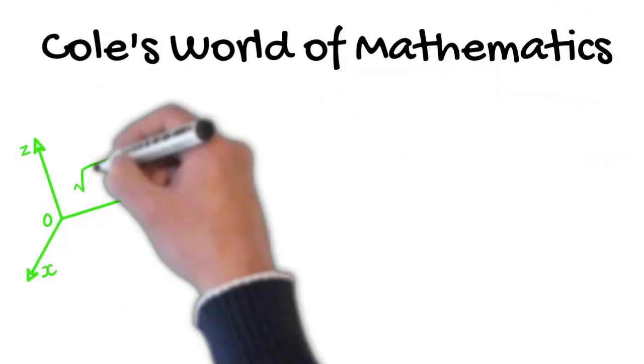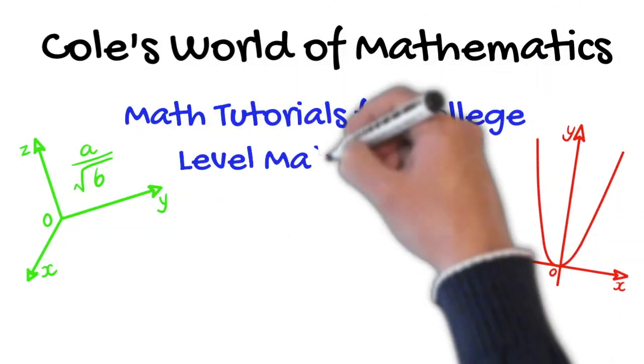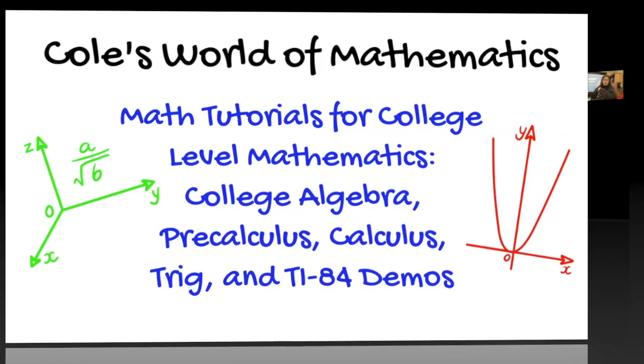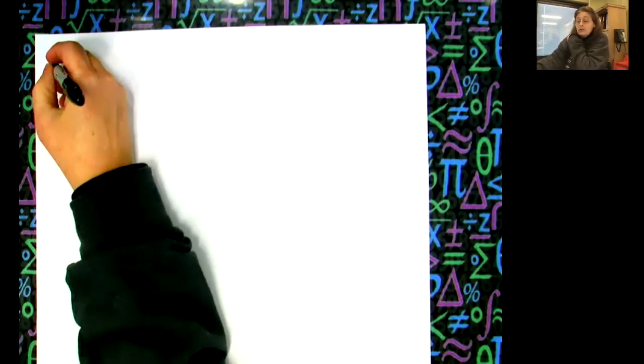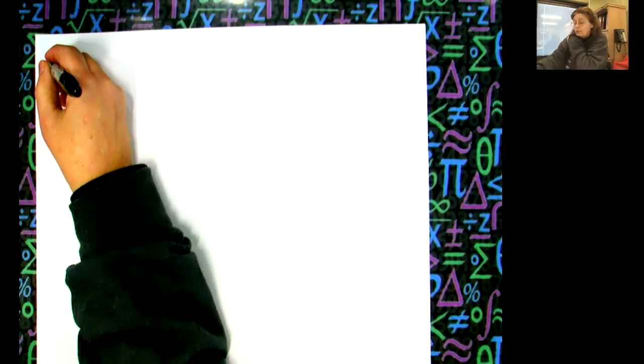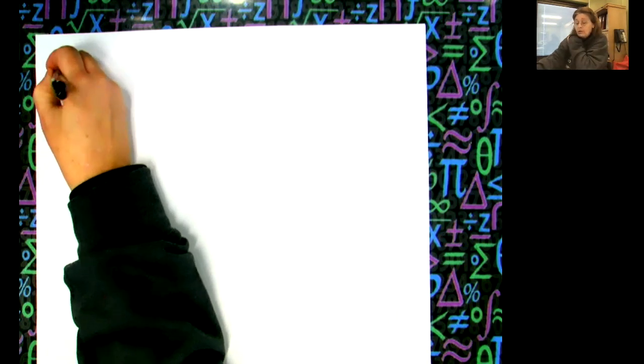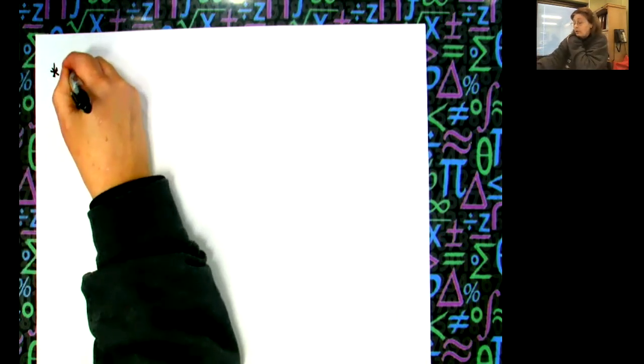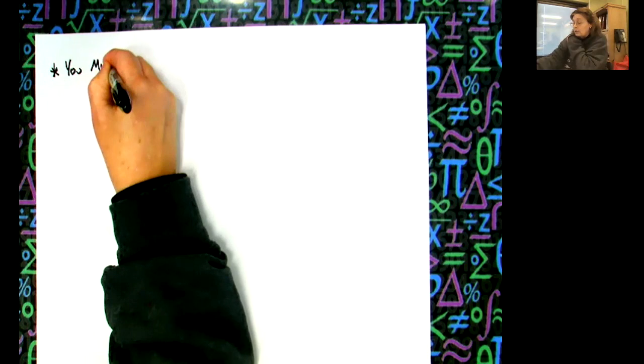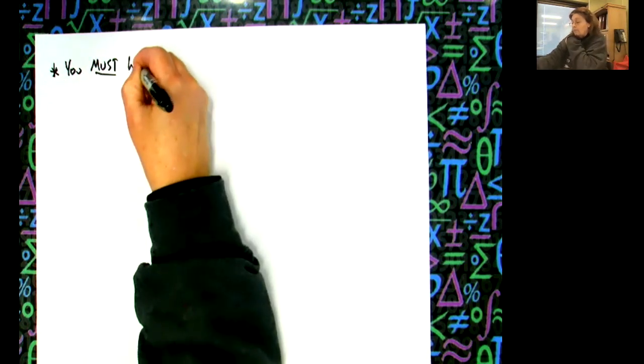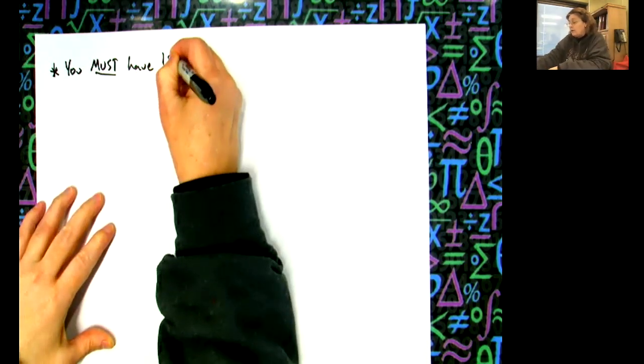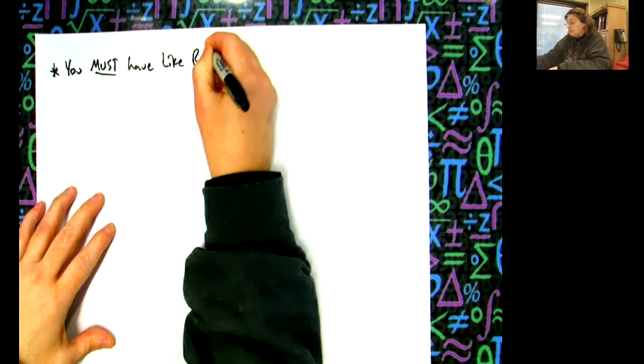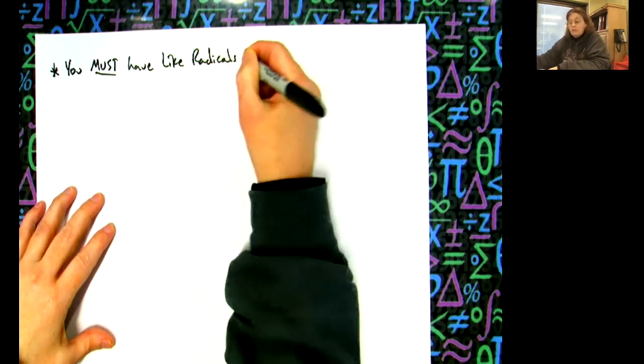Adding and subtracting radicals is a little bit more challenging because you must have like radicals. Let's write that down: you must have like radicals to add and subtract.